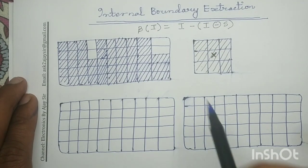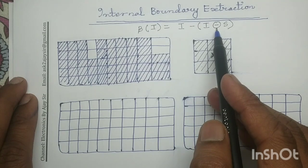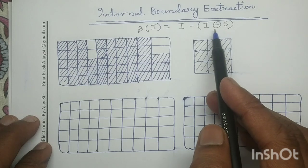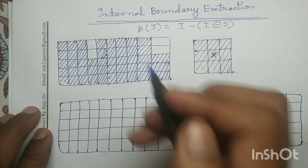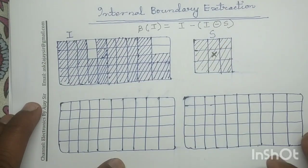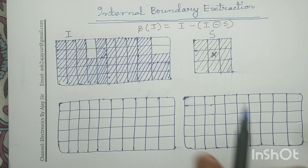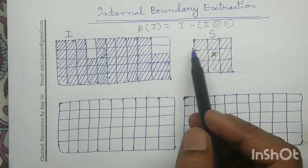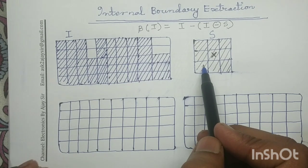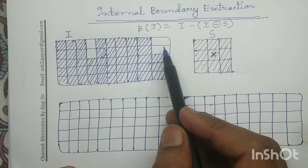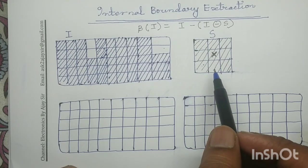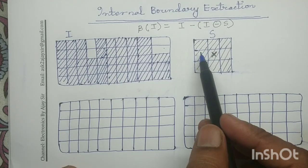Looking at the mathematical expression, I erosion with S is written inside the bracket, so first we will compute the eroded output, that is I erosion with S. In this example, this is the input image I and this is the structuring element S. In the structuring element, the shaded pixel is logic 1 and the unshaded pixel is logic 0. The center pixel and its 8-neighborhood pixels are shaded, meaning they are all at logic 1.